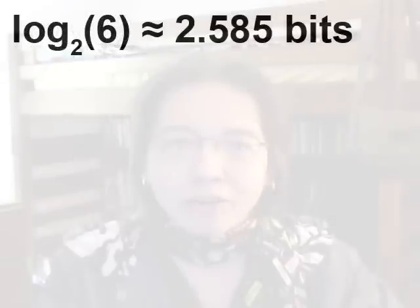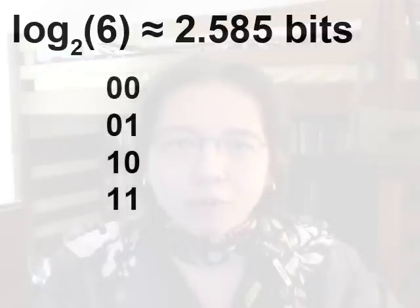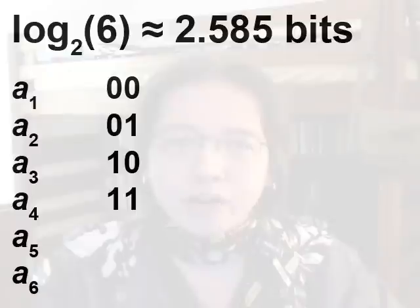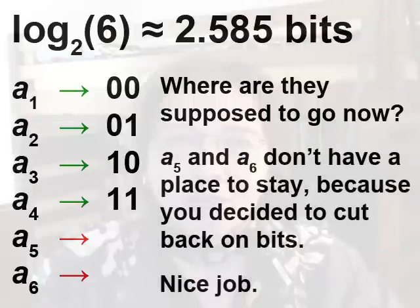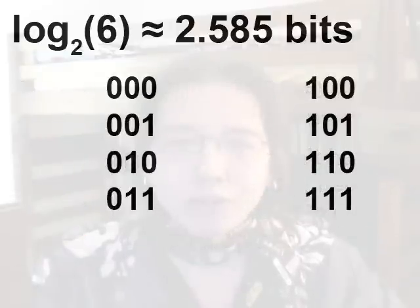Rolling a fair die gives us about 2.585 bits of information. What would happen if we tried using only 2 bits to store the outcome? Well, 2 bits have 4 possible states: 00, 01, 10, and 11. But a die has 6 possible outcomes, and 4 different states aren't enough to store 6 different outcomes. That's why 2 bits isn't enough for a fair die. Information theory lets us know you're not going to be able to pull this off — 2 bits isn't enough. You're going to need at least 2.585 bits. If we use 3 bits, that gives us 8 possible states, and that's enough to account for 6 possible outcomes. So if you were wondering if information theory has any practical applications, that's one of them.